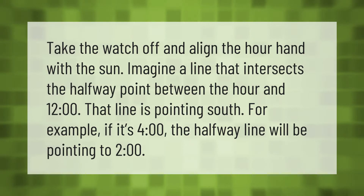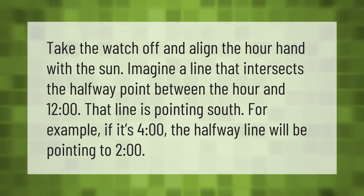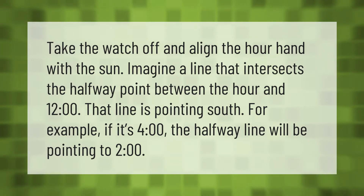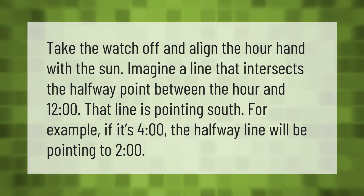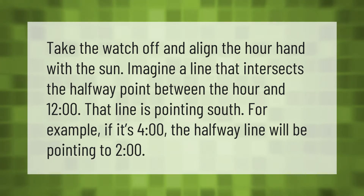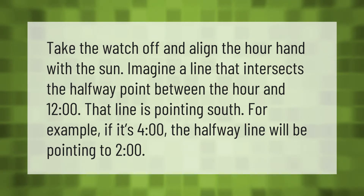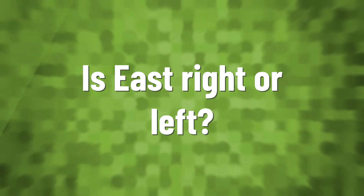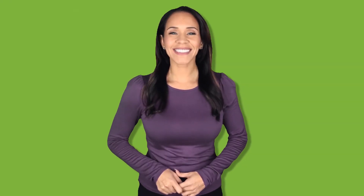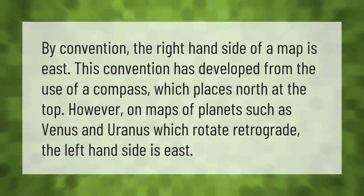Take the watch off and align the hour hand with the sun. Imagine a line that intersects the halfway point between the hour and 12 o'clock — that line is pointing south. For example, if it's four o'clock, the halfway line will be pointing to two o'clock.